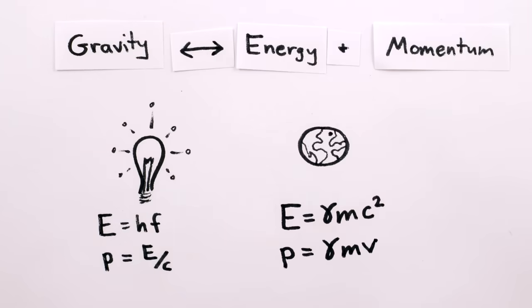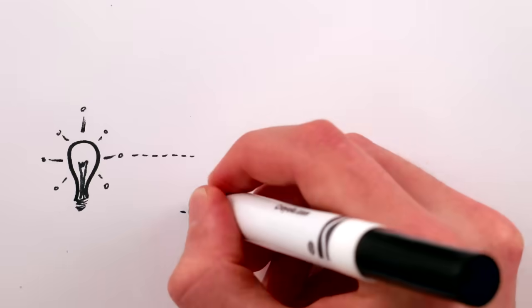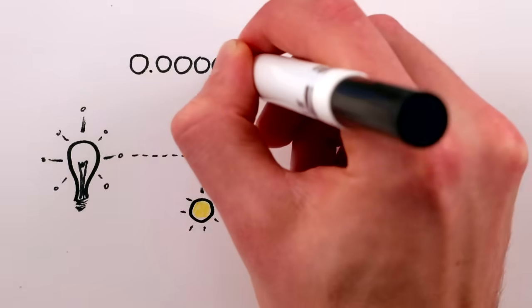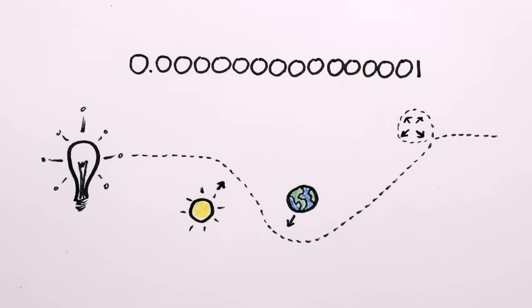Of course, regular matter does, too. So not only does light get bent passing by a star or planet or black hole, but light attracts the planet or star or black hole in return. To be sure, it's only a very, very small amount, but a small amount is not zero.